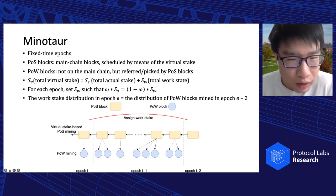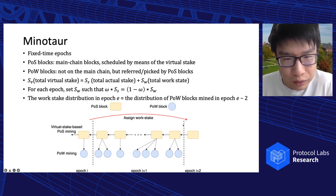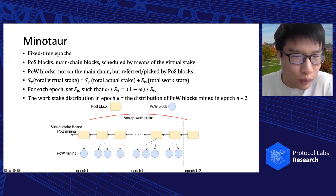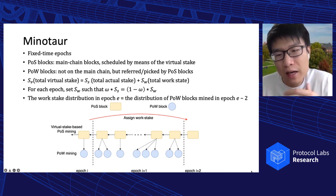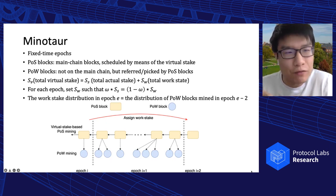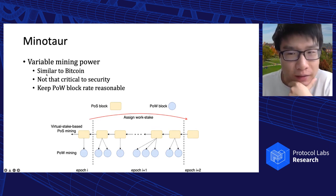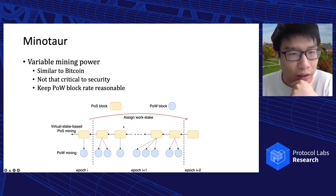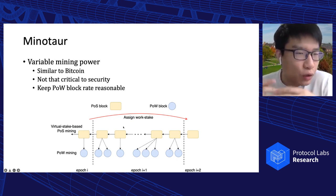There is a one-epoch gap because the work stake must be determined prior to the randomness used for the PoS lottery. In Ouroboros-Praos, the new randomness for an epoch is calculated as a function of block hashes from the previous epoch. So the randomness is drawn from one location, but the work stake distribution is drawn from epoch E−2. Without this one-epoch gap, miners could grind on public keys to send the work stake to their preferred keys — very similar to the stake grinding attack in PoS. Minotaur can also easily support variable mining power using a difficulty adjustment rule similar to Bitcoin.